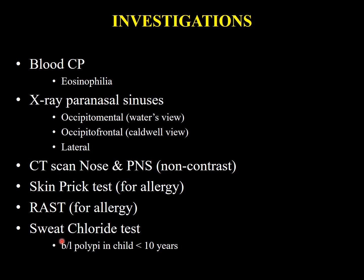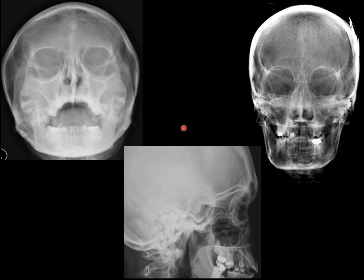Allergy is ruled out by skin prick test and RAST (radioallergosorbent test). In children less than ten years of age, sweat chloride test must be performed to rule out cystic fibrosis. On the X-ray views: in the occipitofrontal view, the frontal sinus may appear hazy; the ethmoid region and maxillary sinuses may also be hazy; the lateral view shows the frontal and sphenoid sinuses.